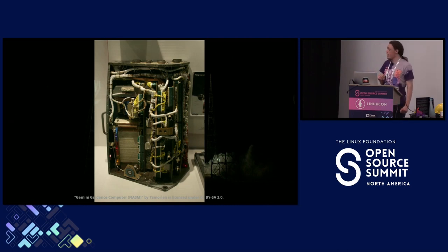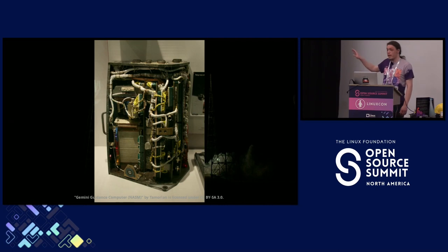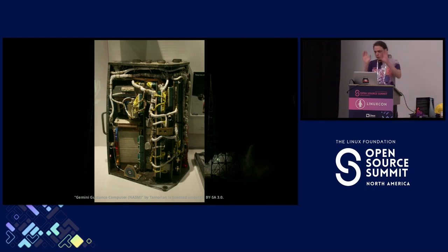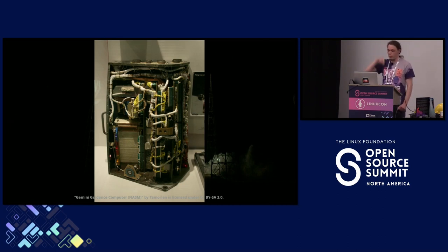The Gemini digital computer was contracted by IBM for NASA for an initial $26.6 million in 1962 — adjusted for inflation, that is just over $270 million US today. IBM wound up delivering 20 of them. They were 18.9 by 14.5 by 12.75 inches and weighed about 60 pounds. They were built with discrete transistors and used core memory for program storage, the total capacity of which was 159,744 bits, divided as 4,096 addresses of 39-bit words across 39 planes of 64-by-64-bit arrays.